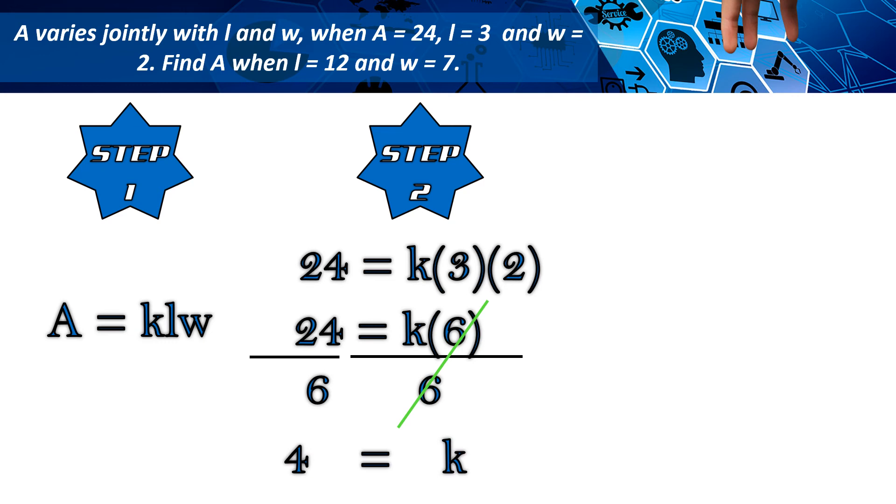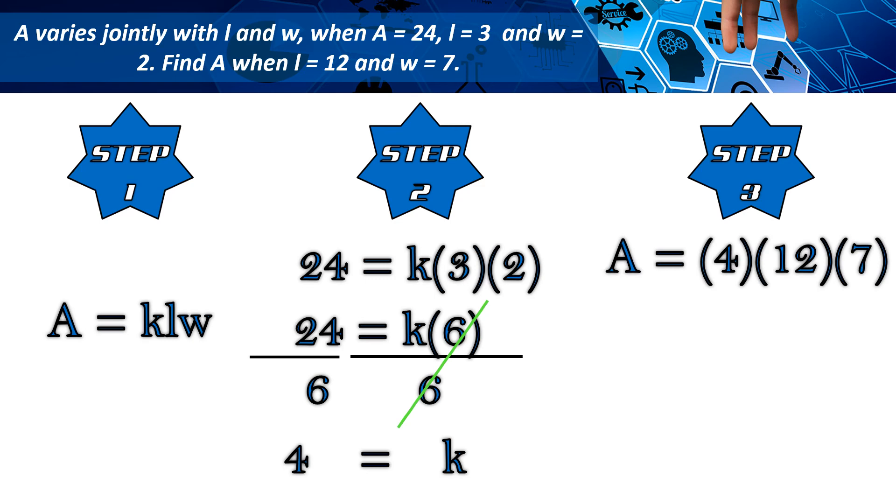At sa step 3 naman, isubstitute ng ating k at ang dalawa pang value sa pangalawang set. 4 times 12 times 7. 48 times 7, we have 335.